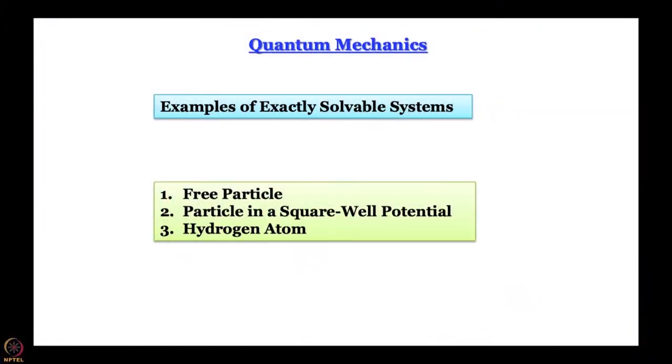What we will do next is demonstrate this by working with exactly solvable systems. In the next few minutes we will introduce the quantum mechanics of a free particle. A free particle means something that moves without interacting with anything else — it thinks there is nothing else in the universe. If it thinks there is nothing else in the universe, it does not experience any potential energy, because potential energy arises by virtue of position relative to something else.